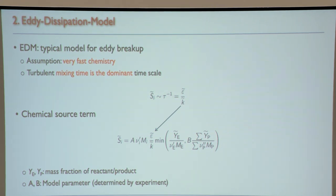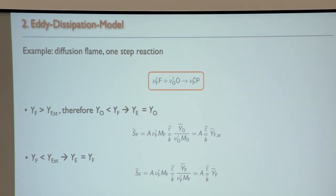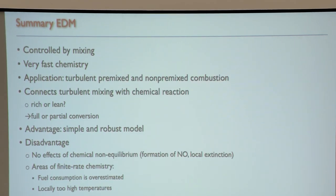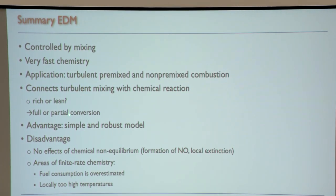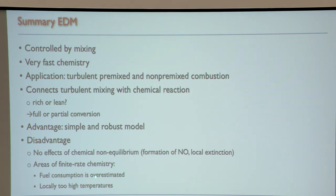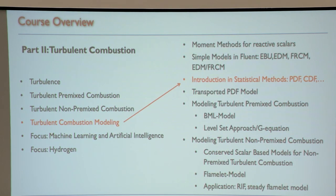Since it's one-step global chemistry, fuel consumption is usually a little overestimated and temperatures are a little too high. Summary: both models are controlled by mixing and fast chemistry, and are very simple and robust. The disadvantage is that anything involving finite-rate chemistry effects cannot be captured.